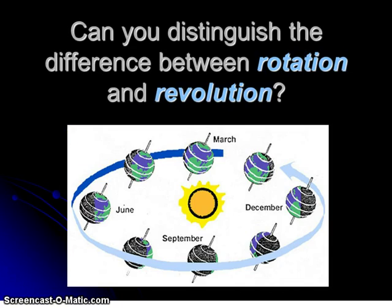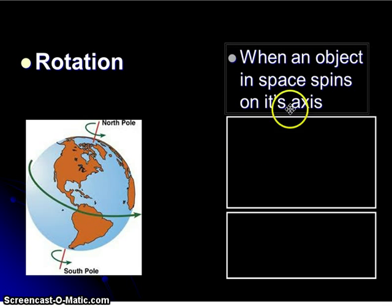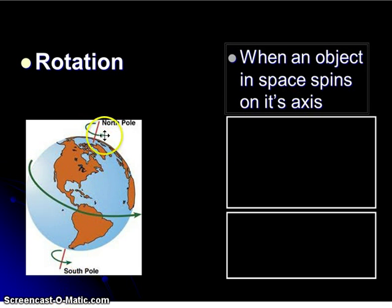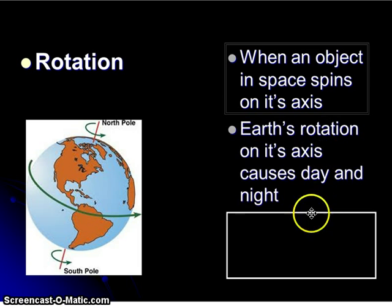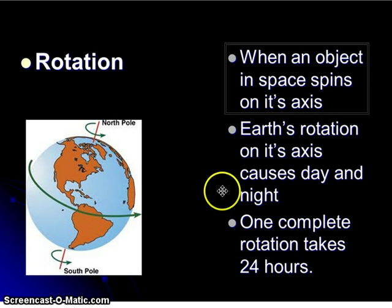Do you remember this image from the fall — rotation and revolution? Rotation is an object spinning on its axis. There is an imaginary pole that splices through the earth, and it is along this polar axis in which we rotate. It is rotation that creates day and night here on earth, and it takes earth about 24 hours to rotate.